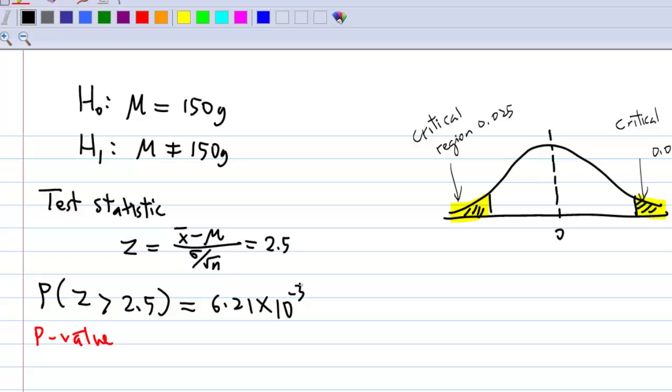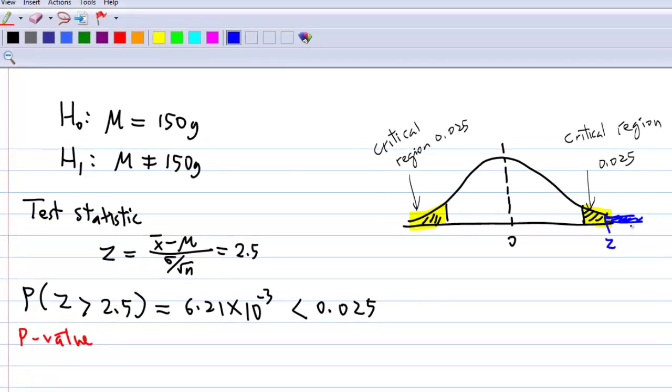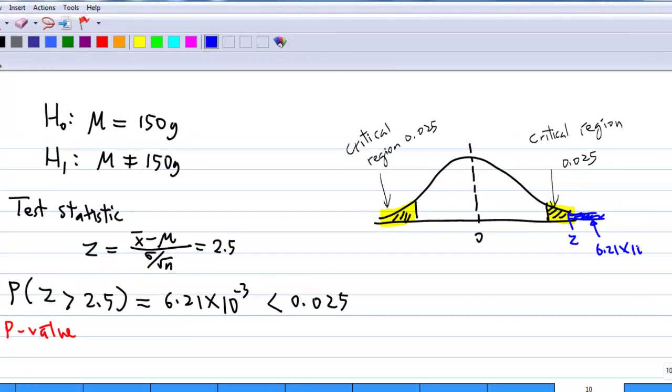This is equal to 6.2097 times 10 to the power minus 3. And definitely, this value is less than 0.025. That means that z here is somewhere where this area is 6.21 times 10 to the power minus 3, which is less than 0.025.